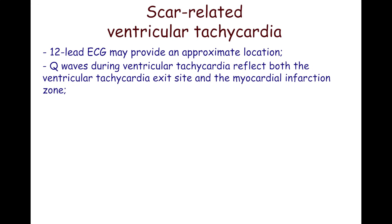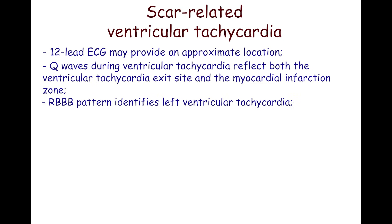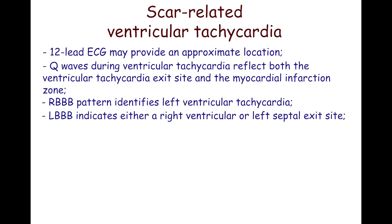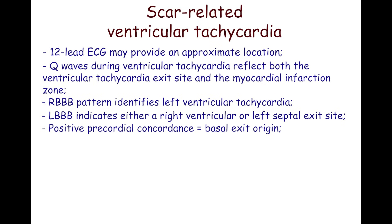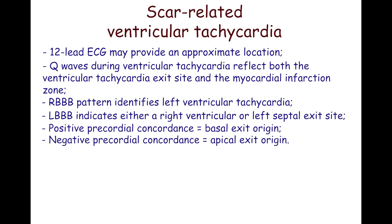Q waves during ventricular tachycardia reflect both the VT exit site and the myocardial infarction zone. In general, a right bundle branch block pattern identifies left ventricular tachycardia, while left bundle branch block indicates either a right ventricular or left septal exit site. Positive precordial concordance — meaning positive QRS complexes in all precordial leads — identifies a basal origin. Negative precordial concordance — meaning negative QRS complexes in all precordial leads — indicates an apical exit site.